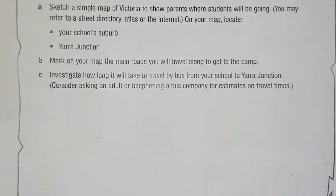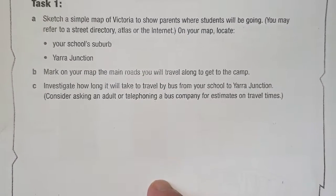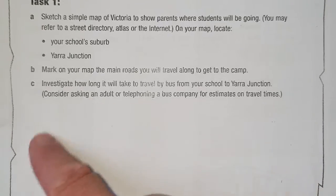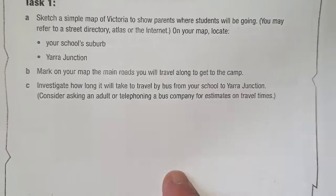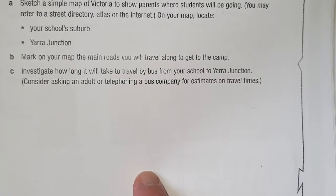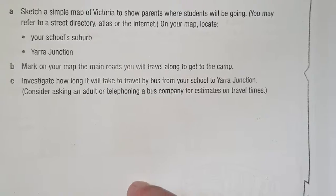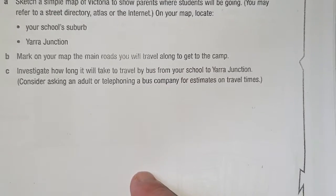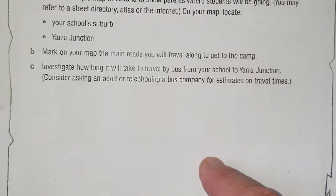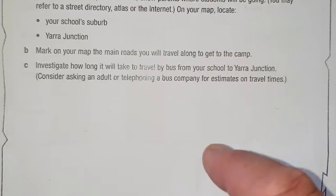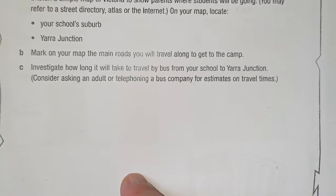Have a look at Google Maps — it might give you some help. After you've drawn your little sketched map, look at where Yarra Road Primary School would be. We're in Croydon North, so just put a little dot there and write Croydon North. Then find Yarra Junction on Google Maps — it's further out to the east — put a dot there and write Yarra Junction. Then it says to mark the main roads.